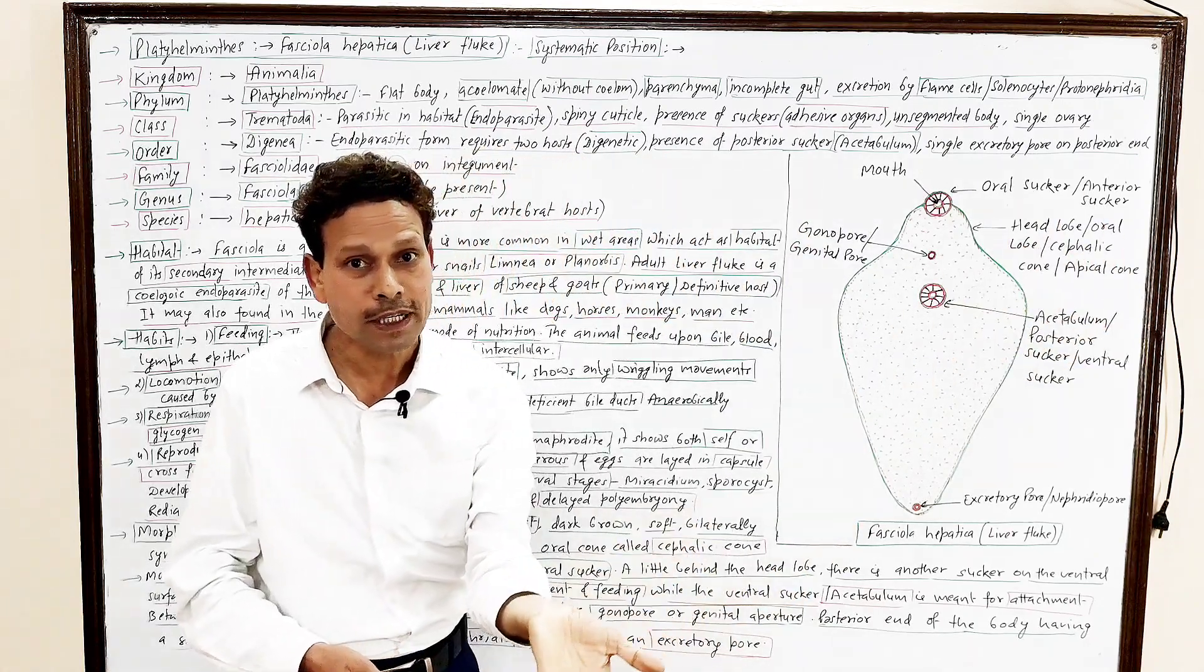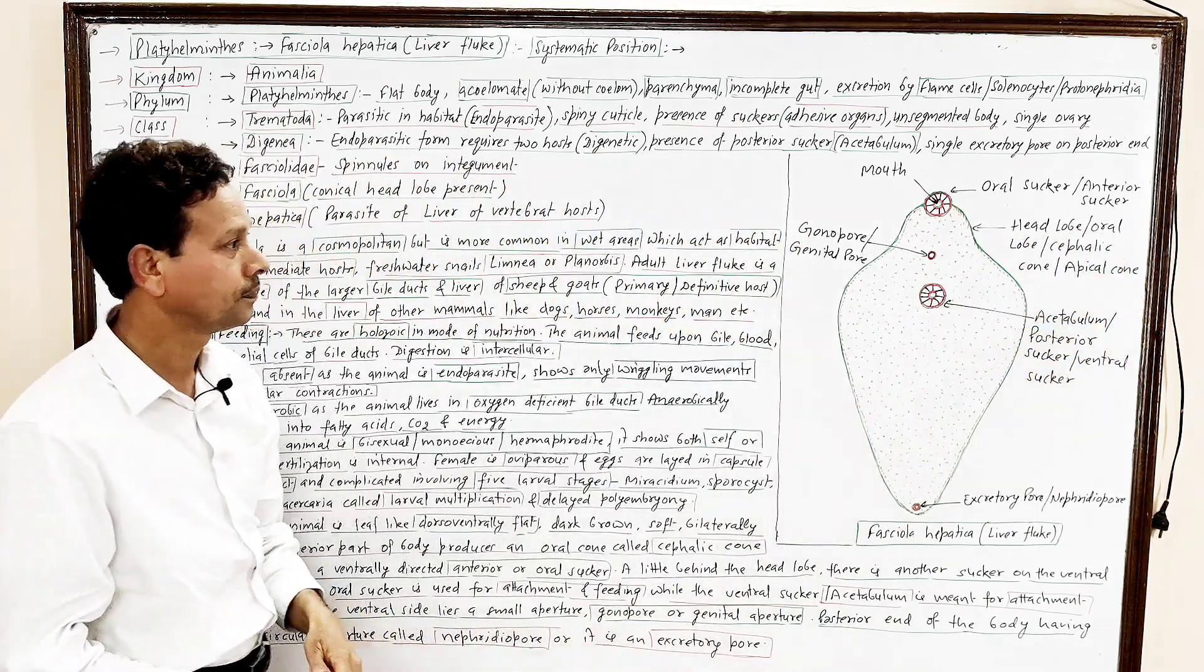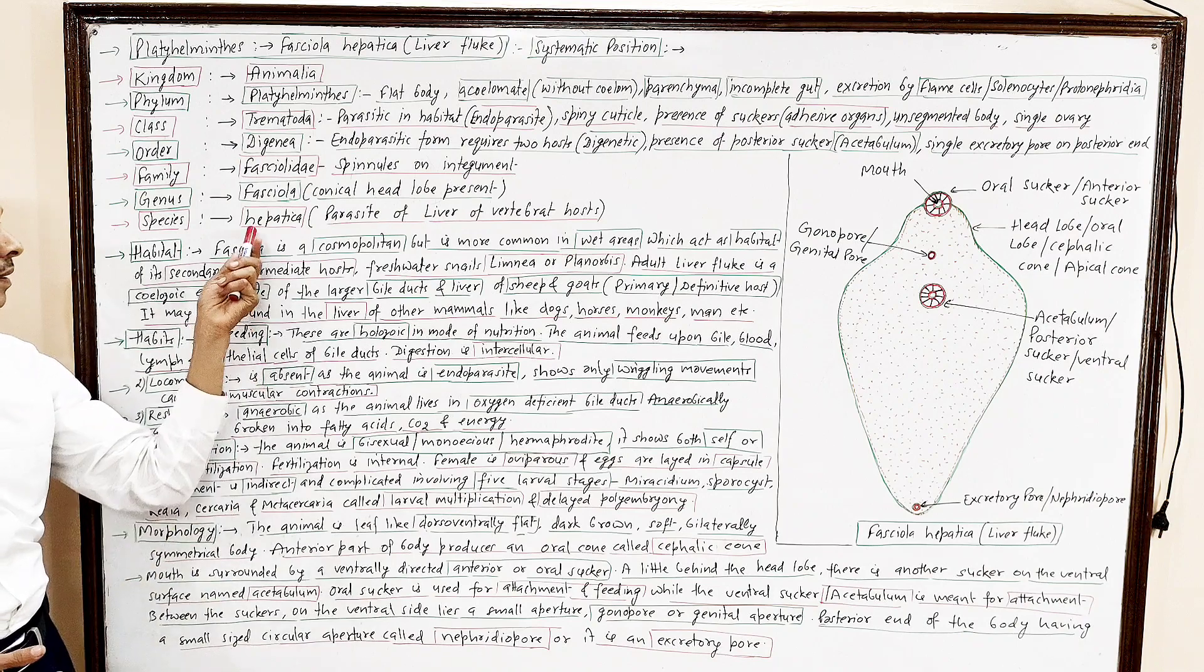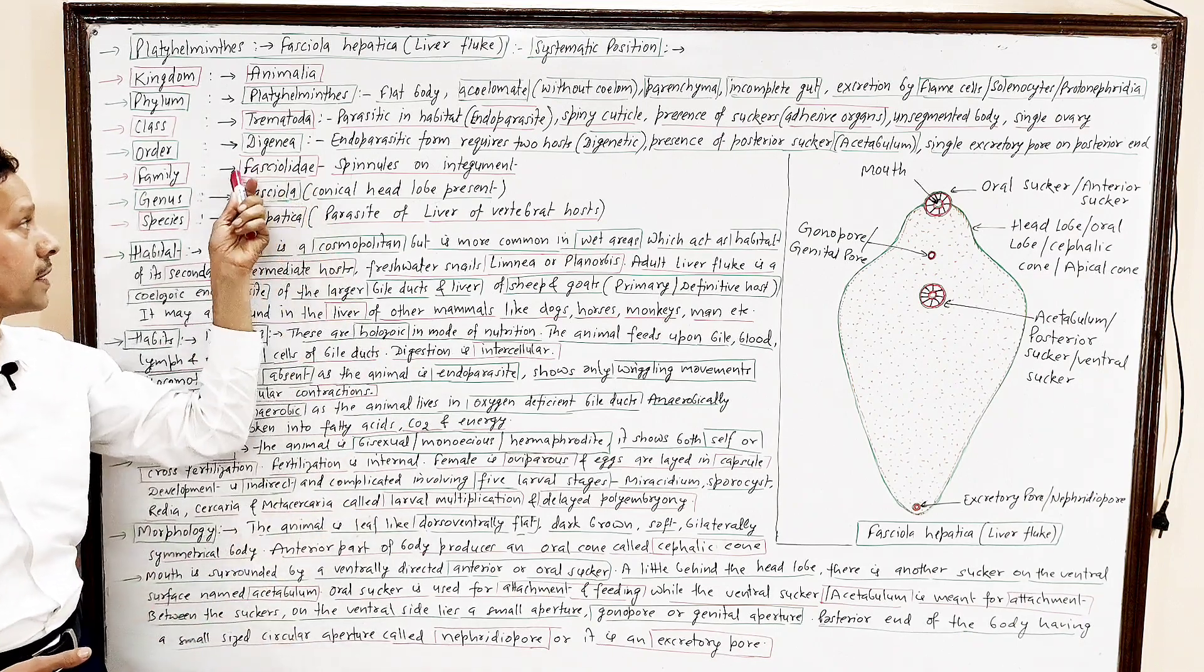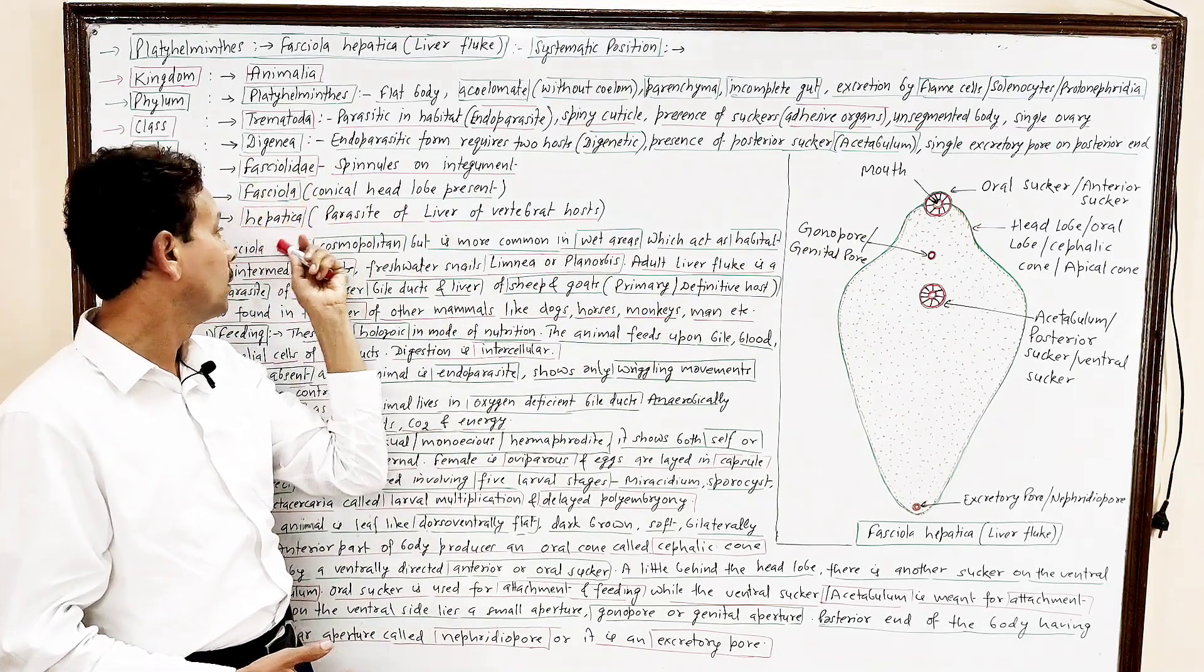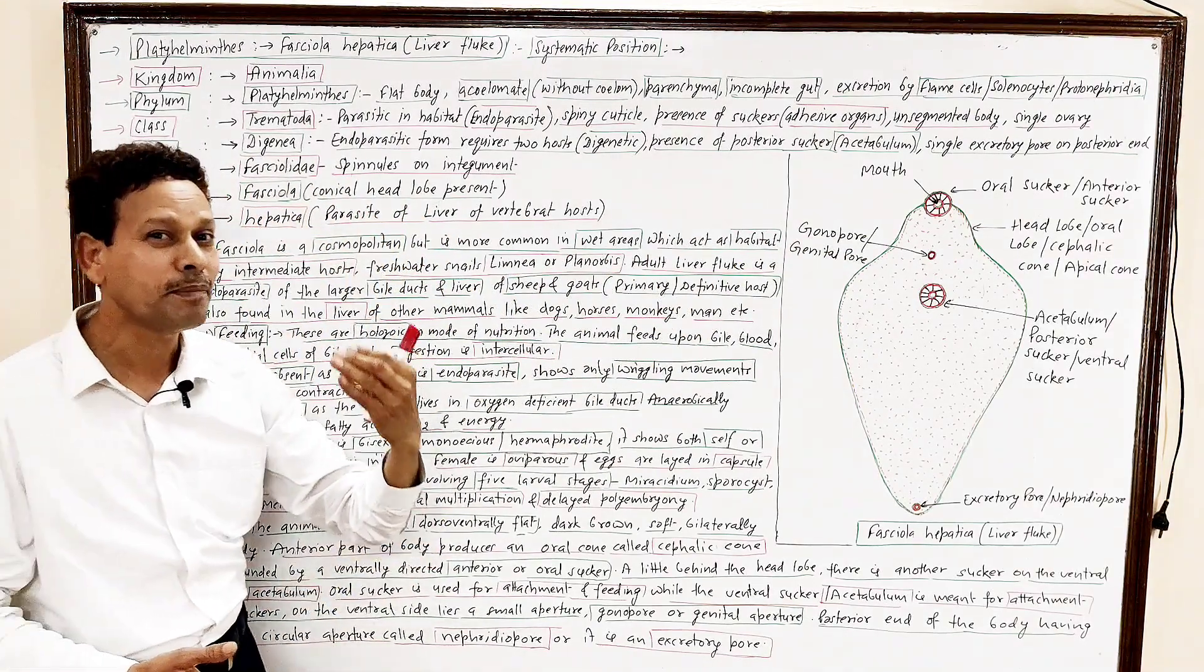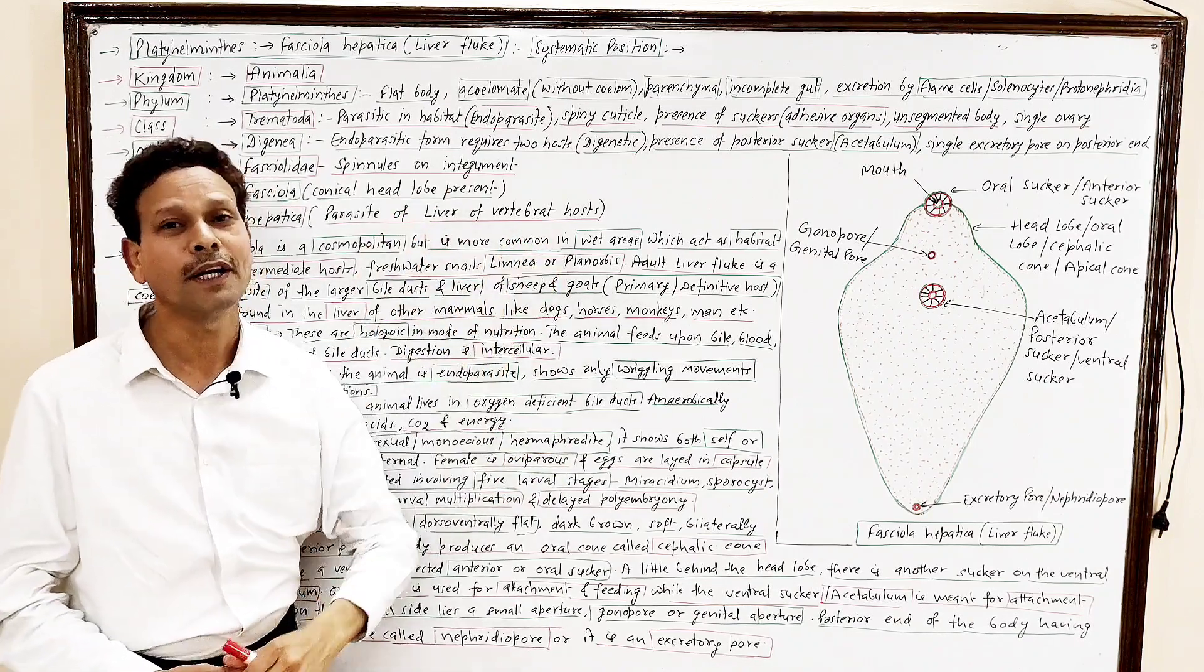The species, hepatica. Fasciola hepatica. Fasciola is named due to presence of, on this anterior region, a conical projection. And it is species, it is hepatica, because it is a parasite, liver of vertebrate host.